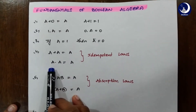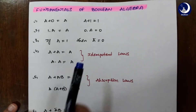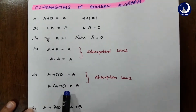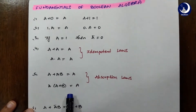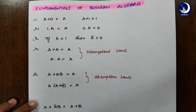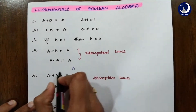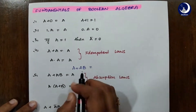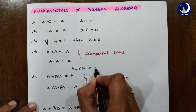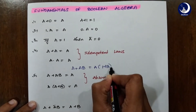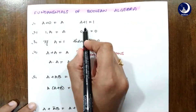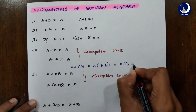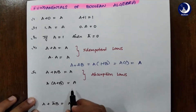Instead of writing a term two times we can just write it once. Now absorption law states that A+AB=A and A·(A+B)=A. So just a simple proof: A+AB equals — we can take A common from both terms — A into (1+B). Now 1 plus anything equals 1, so this becomes A into 1, which equals A. That's what our formula is all about.